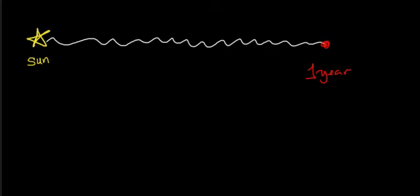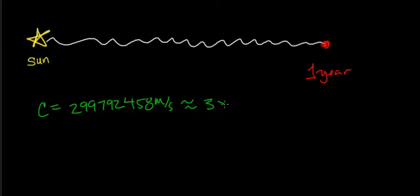To figure out the distance that light travels in one year we need to know the velocity or speed of light. The speed of light is known exactly to be 299,792,458 meters per second, but you often see that approximated as 3 times 10 to the 8th meters per second.